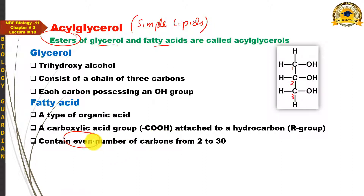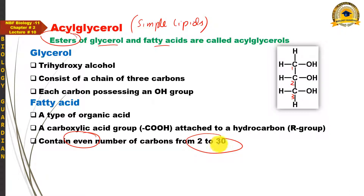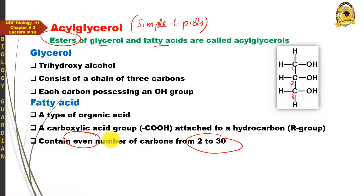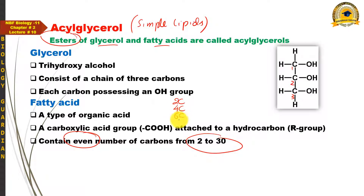Fatty acids میں شرط یہ ہے کہ total number of carbon atoms ہمیشہ even numbers میں ہوں گے اور ان کی range two سے لے کر thirty تک ہوگی۔ Thirty سے زیادہ carbons پر مشتمل کوئی organic acid fatty acid نہیں ہو سکتا۔ اسی طرح two carbons سے کم پر مشتمل کوئی organic acid بھی fatty acid نہیں ہو سکتا۔ سب سے چھوٹا fatty acid two carbons کا، پھر four، six اور اسی طرح up to thirty۔